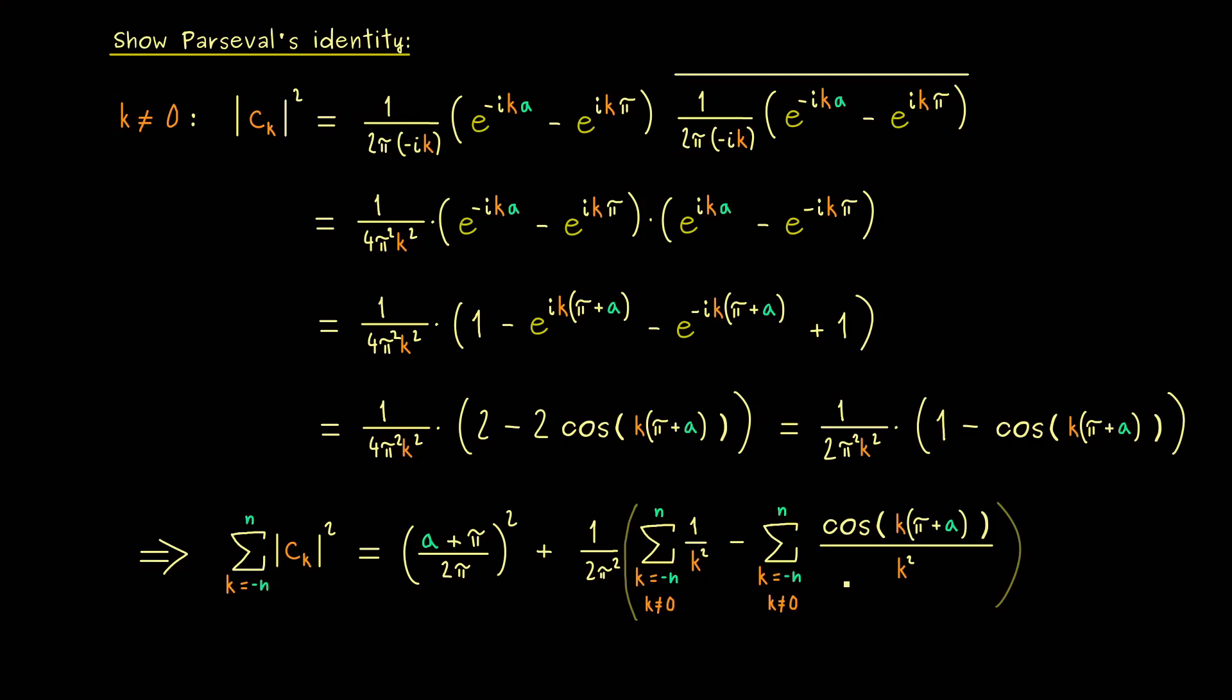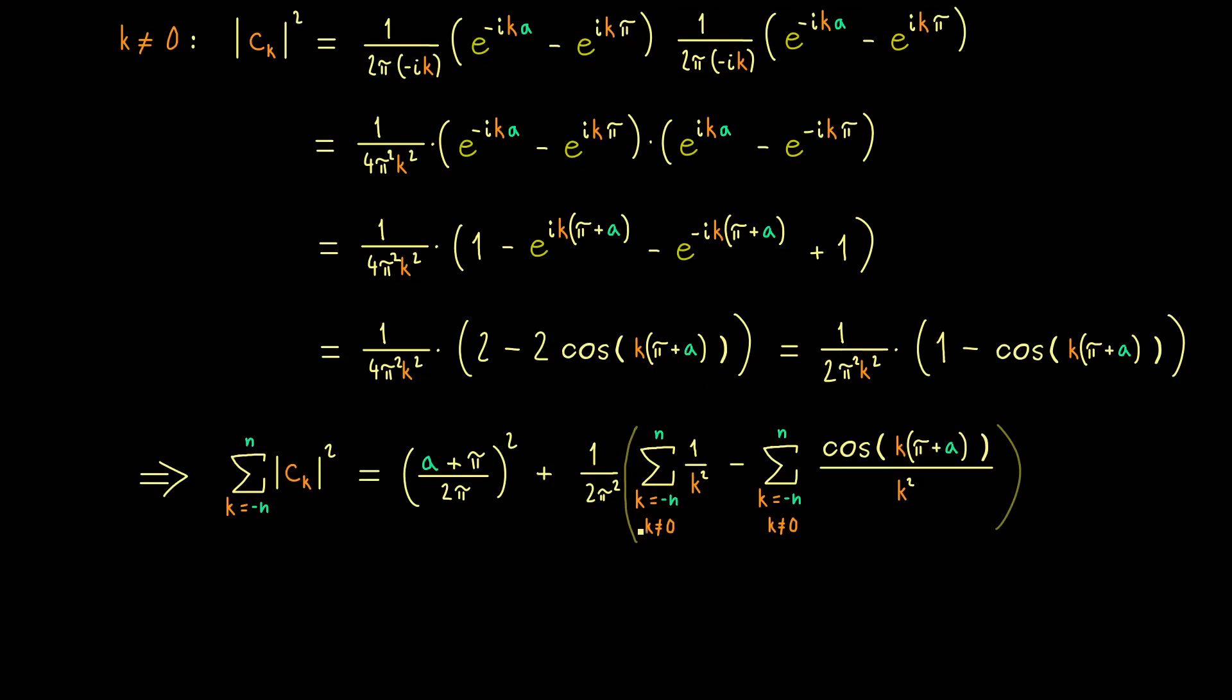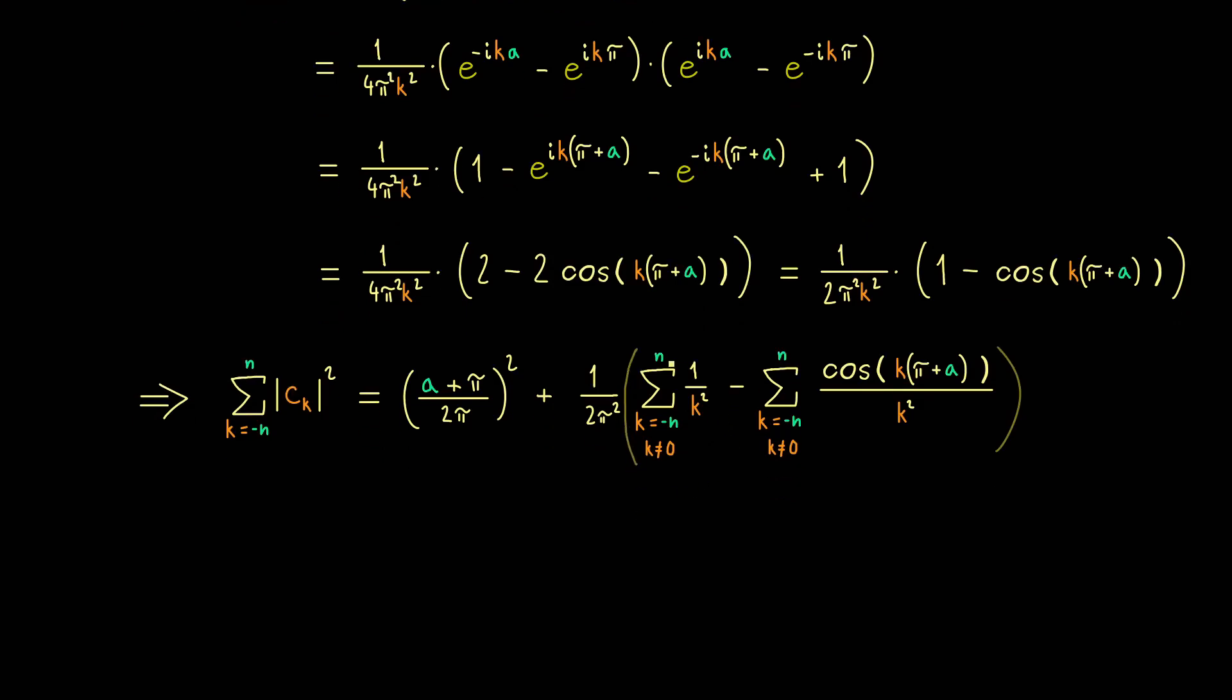And we should immediately recognize two things. First, the whole formulas here don't change if we substitute k with minus k. Therefore, we can just rewrite the thing as a sum from k is equal to 1 to n and 2 times it. And the second thing you should recognize is that we have convergent series here, if we send n to infinity.